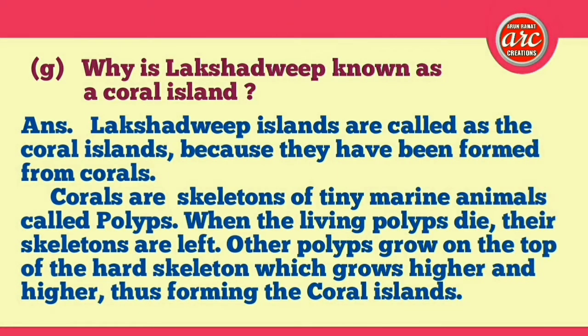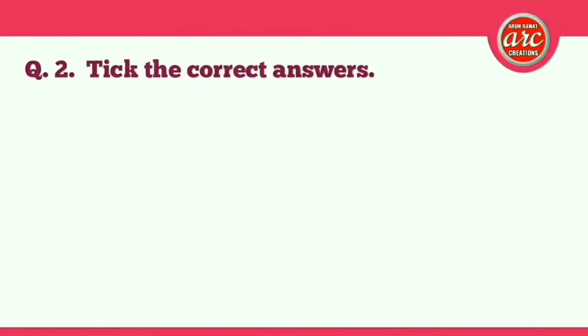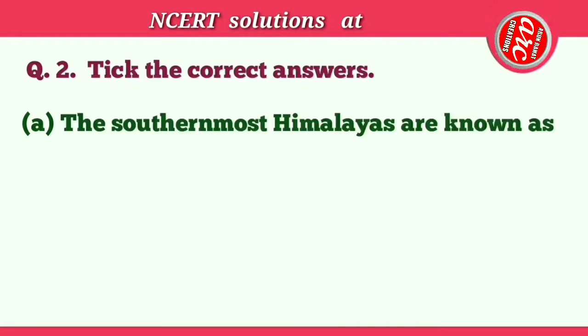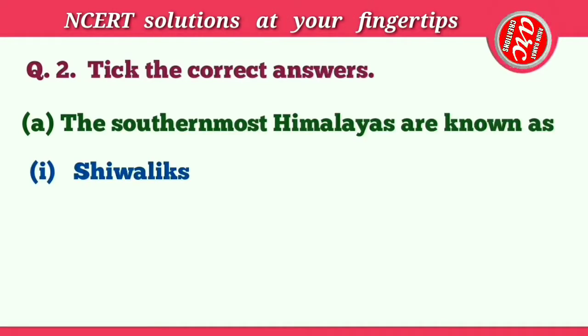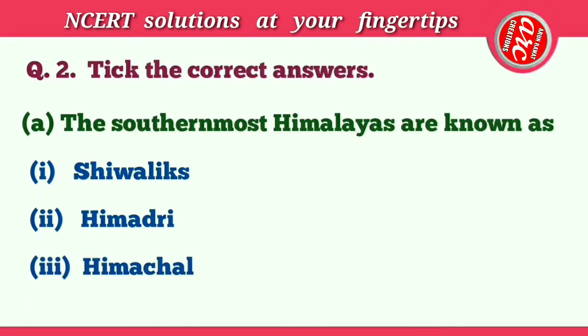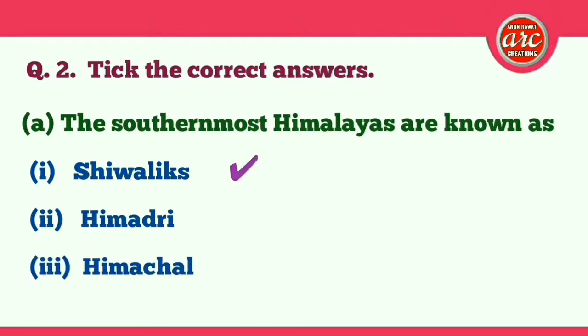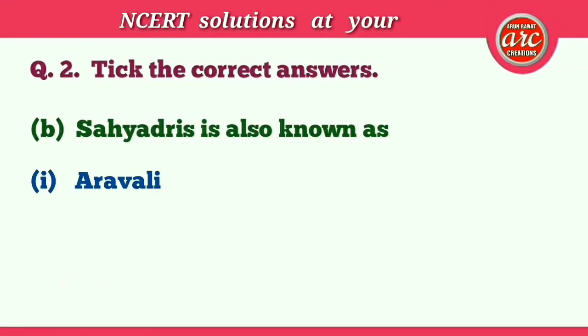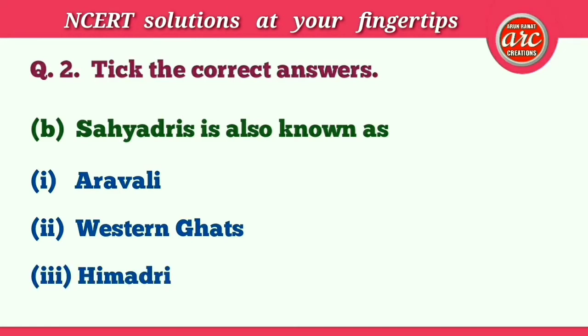Question number two: Pick the correct answers. (a) The southernmost Himalayas are known as: (1) Shivaliks, (2) Himadri, (3) Himachal. The correct answer is number one — Shivaliks. (b) Sahyadris is also known as: (1) Aravalli, (2) Western Ghats, (3) Himadri. The correct answer is number two — Western Ghats.